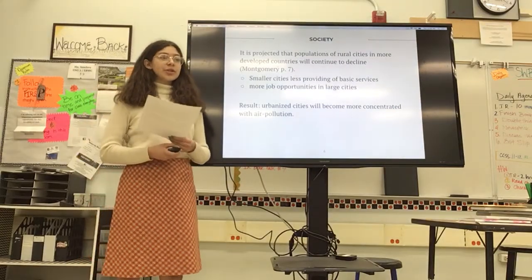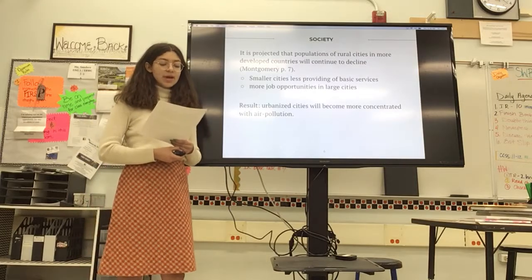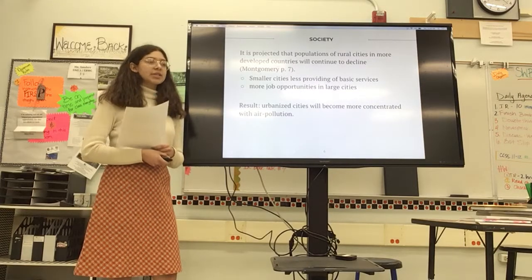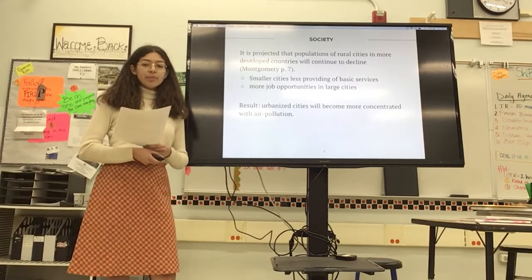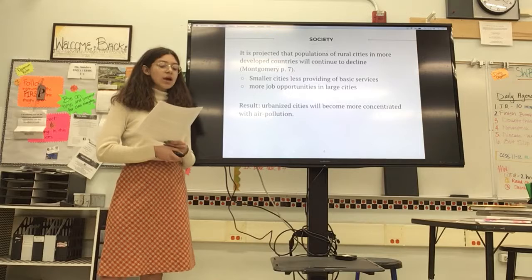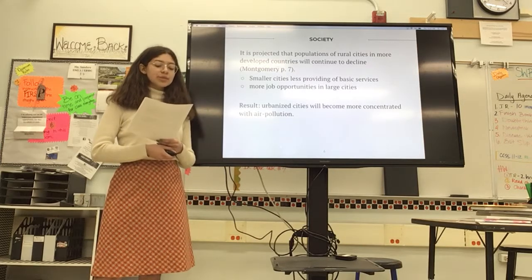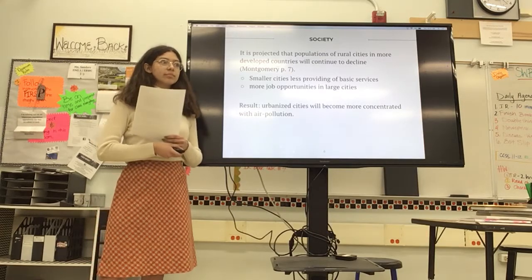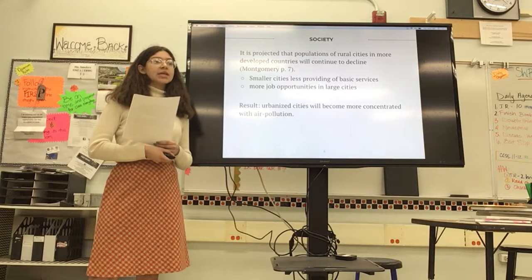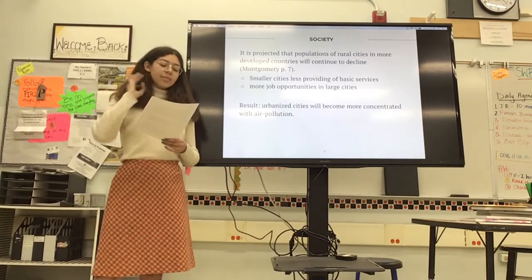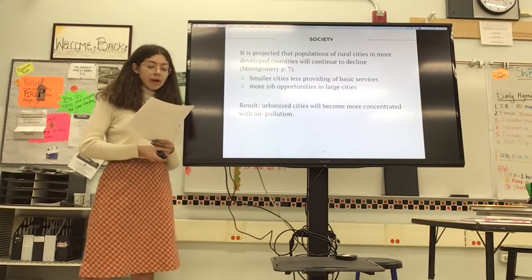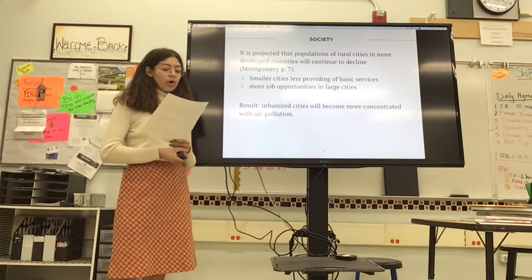In the fourth stimulus material, the urban transformation of the developing world explains partly why this has happened. Even though the material's main focus is on developing countries such as Asia and Africa, what is discussed can still be applied to the population status of America. According to the stimulus material, which was written back in 2008, it is projected that the population in more rural areas is expected to decline. This is because smaller cities are less well provided with basic services and do not have more job opportunities than cities do. With more people moving to bigger cities, which are more industrialized and thus already more polluted, there is more demand for the resources that emit pollution, such as transportation, power generation, and manufacturing, thus causing urbanized cities to become more concentrated with pollution.